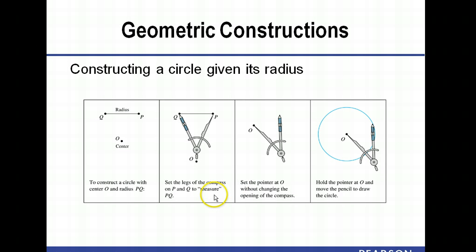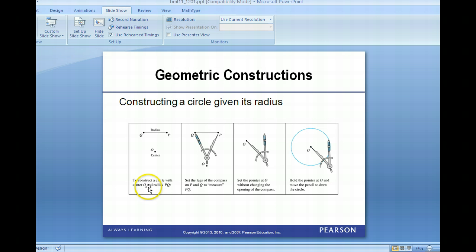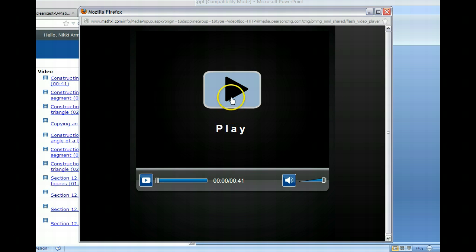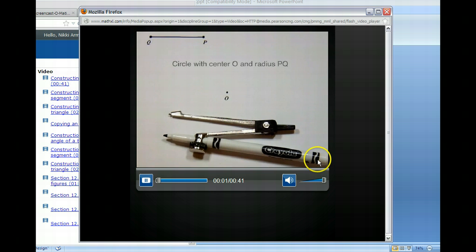Okay, and actually let's do it now. So let's construct a circle if we know its center and its radius. Okay, so if we know where we want to center a circle and we know its radius then we can construct a circle from that information. So what we do is we set the legs of the compass, these are the legs of the compass here, right, to measure PQ to measure the radius. We then set the pointer at the center of the circle and swing it around, right, and actually what's great about our textbook is that we have a lot of different media that we can make use of and one thing that we have on our website is videos.